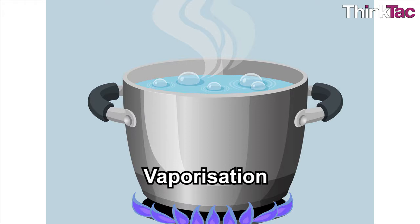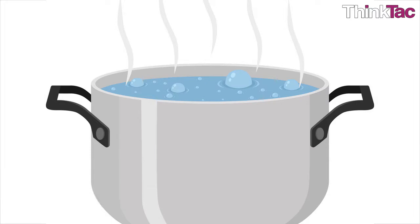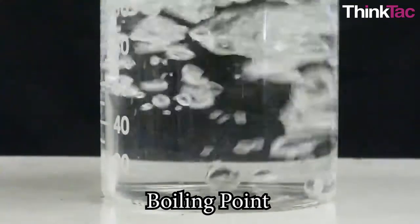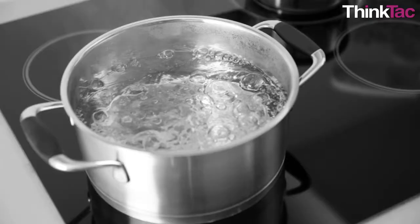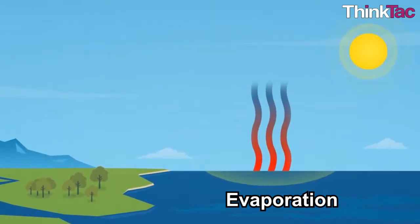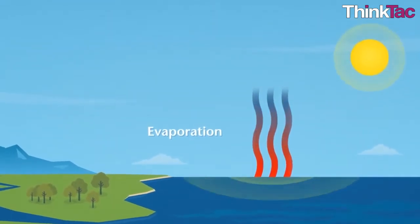Vaporization is when liquid is converted to its vapor in a state transition. Boiling and evaporation are the two forms of vaporization. The temperature at which the vapor pressure of a liquid equals its ambient atmospheric pressure is called the boiling point. Boiling is a bulk phenomenon and not restricted to the surface of a liquid like vaporization. Evaporation is a type of vaporization that occurs at a temperature below the liquid's boiling point — it is a spontaneous surface phenomenon.